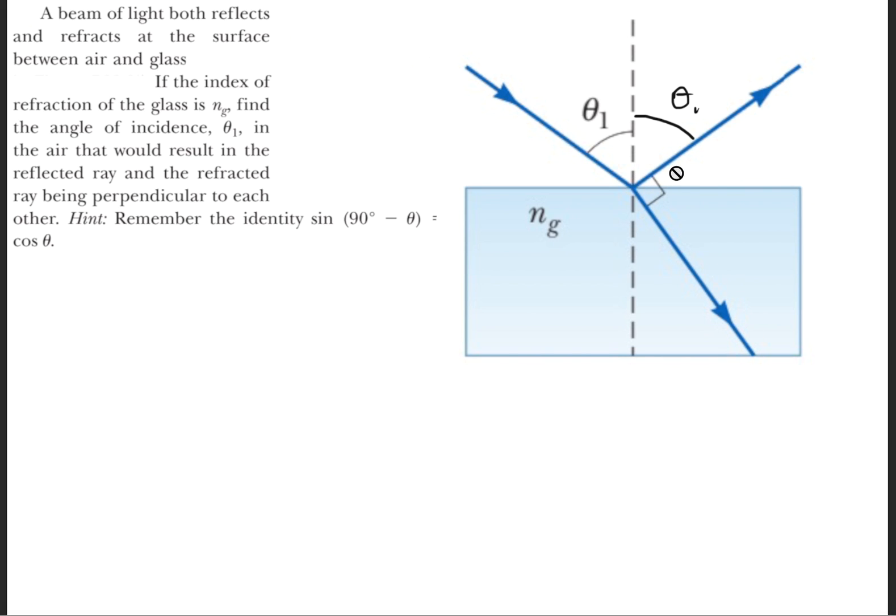So when this gets reflected, assuming that this is a flat, smooth surface, we're going to use the law of reflection. The law of reflection states that the incident angle must equal the reflected angle. So with that being the case, we know that theta 1 here is the same as this angle right here. So this is also theta 1.